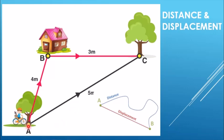Now for example the boy is at A and reaches at C. This point is called the final point — the initial point is where he started. When he reaches the final point, that is called displacement — from the initial to the final. So displacement is the minimum distance. Here the minimum distance is 5 meters, not 7 meters. That is the minimum distance travelled by the moving object in one direction from the original point to the final point.